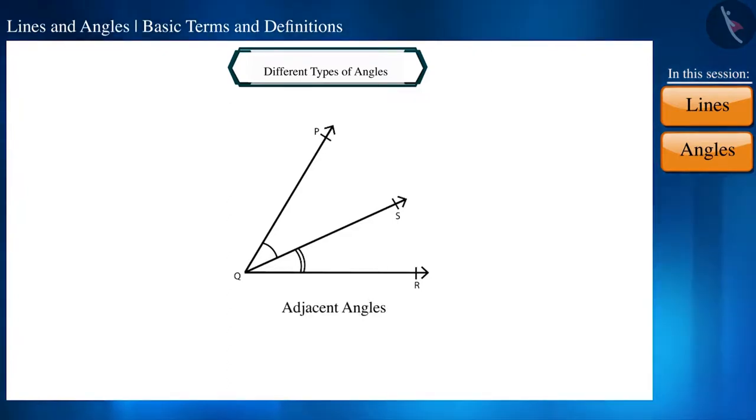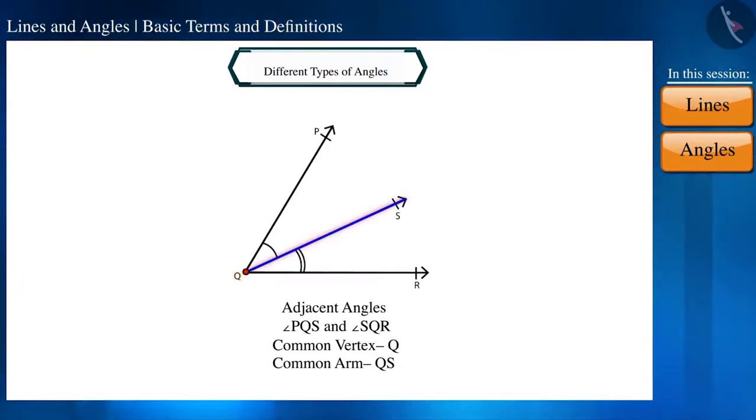As you can see in the figure, the vertex Q of both angles is the same for angle PQS and angle SQR. The arm QS is the common arm, and both sides PQ and QR are in the opposite direction of arm QS. That is why we can say that angle PQS and angle SQR are adjacent angles.